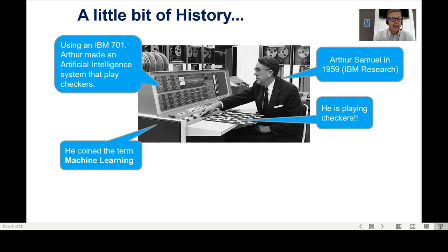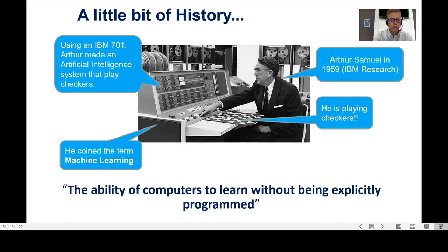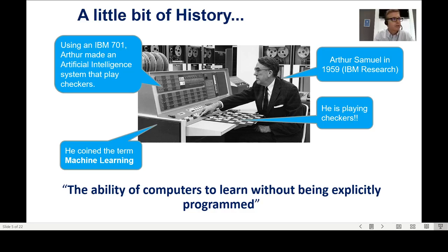Arthur Samuel was the one who coined the term 'machine learning' that we use today. He defined it as the ability of computers to learn without being explicitly programmed. This definition is not very informative though — we really understand it only when we already know what machine learning is. Before that, it sounds like science fiction.